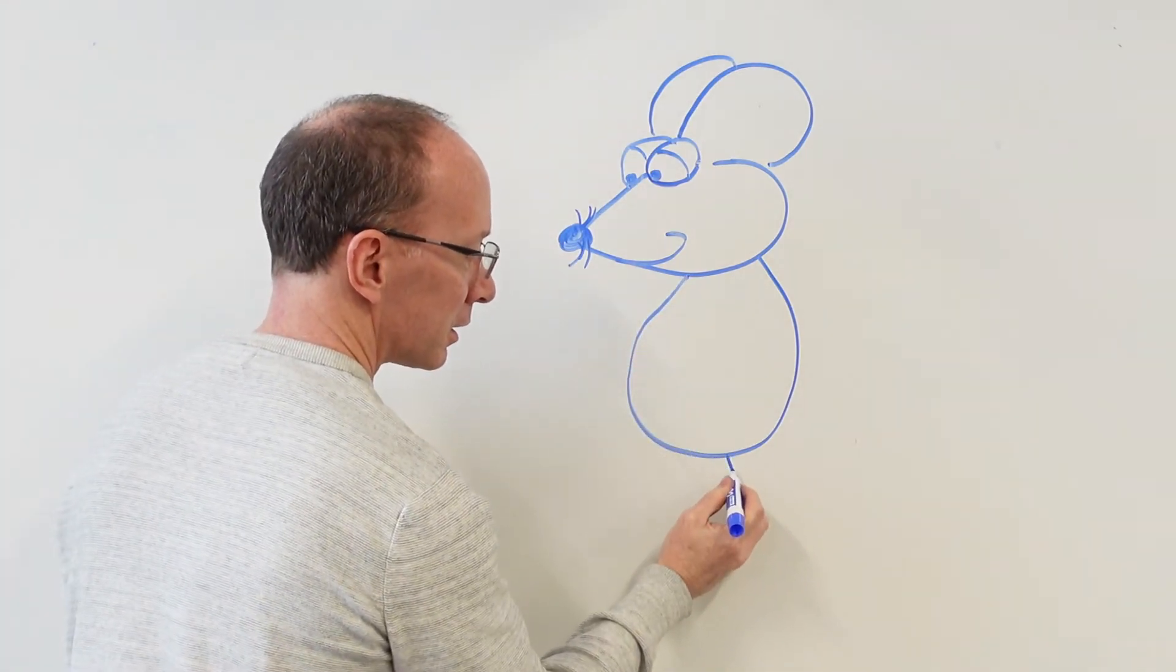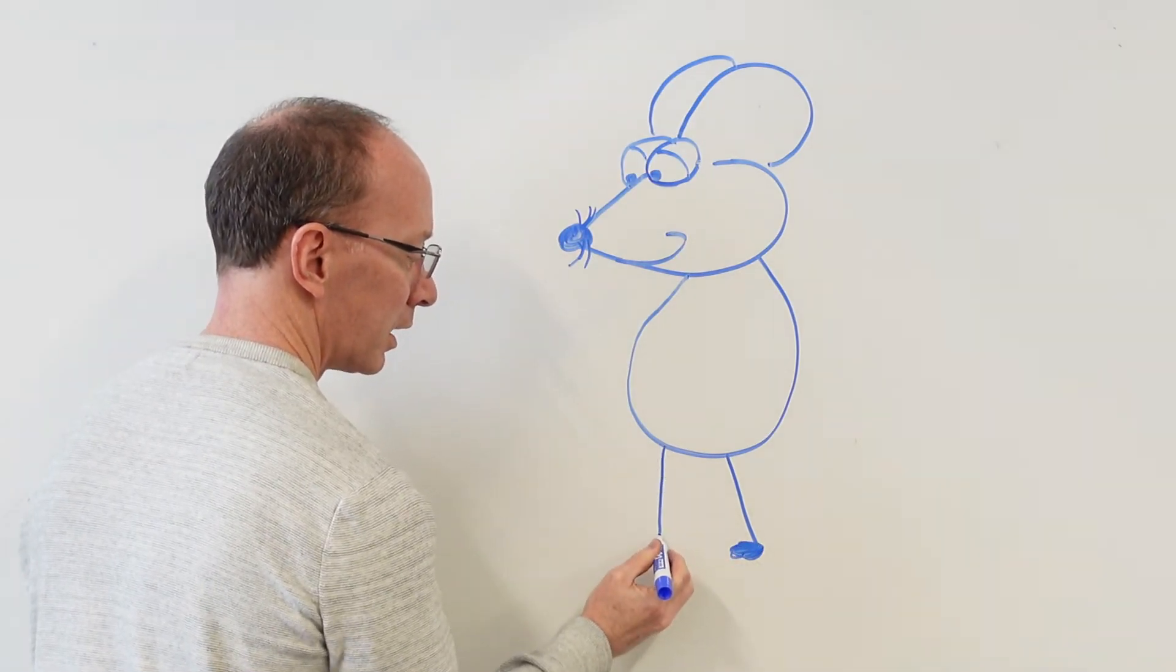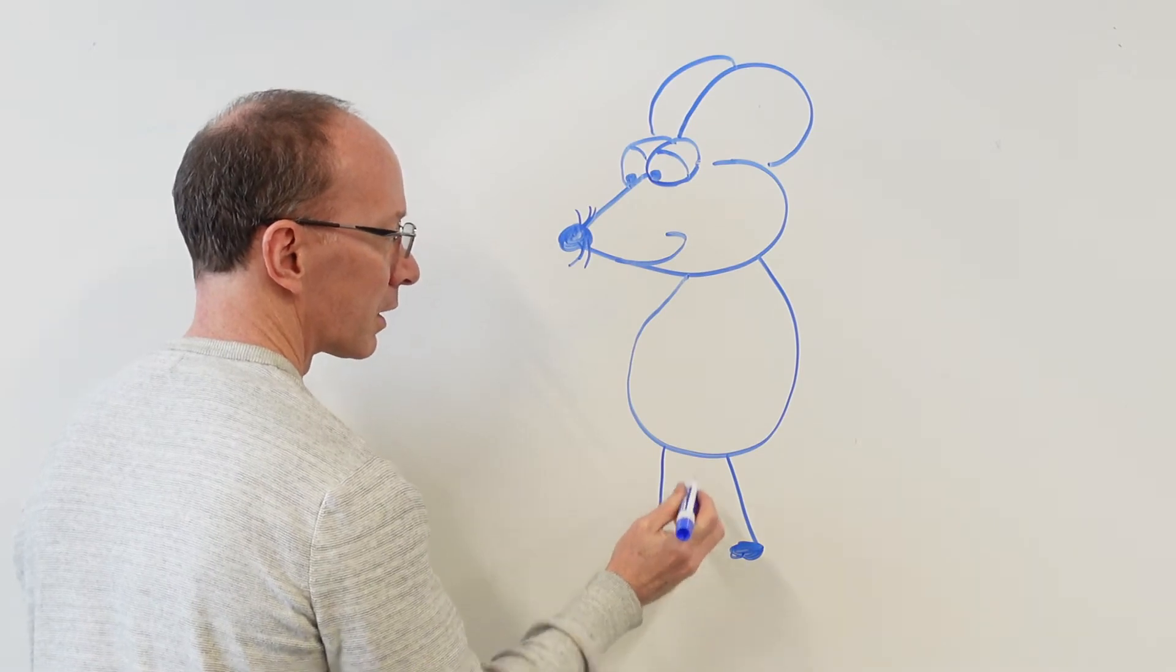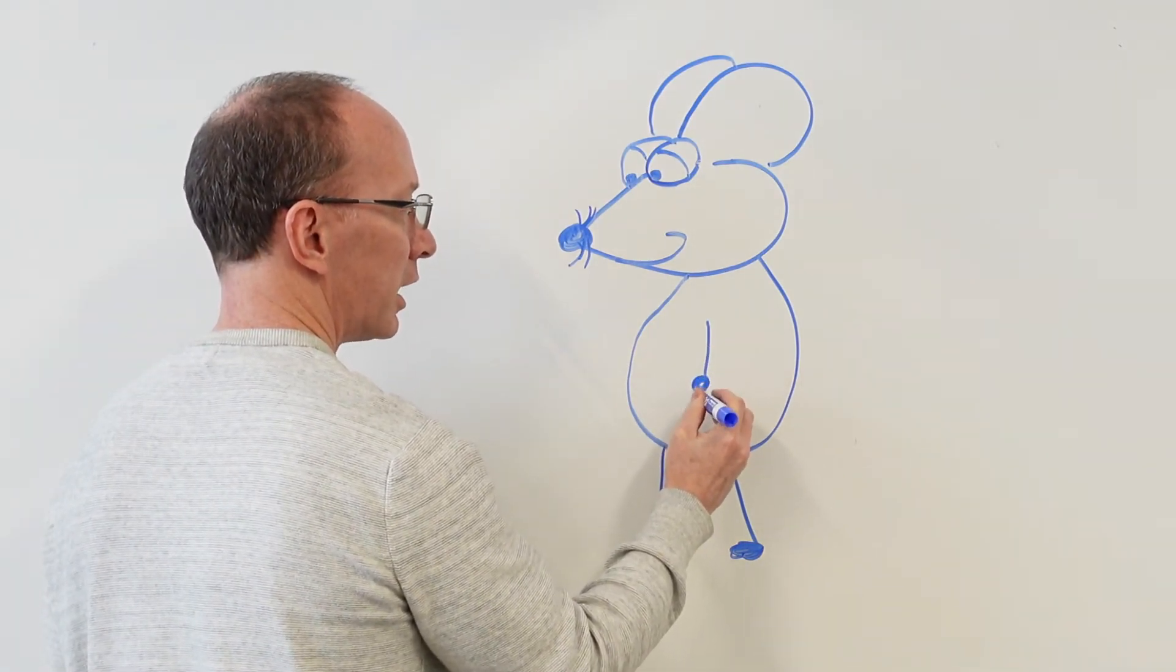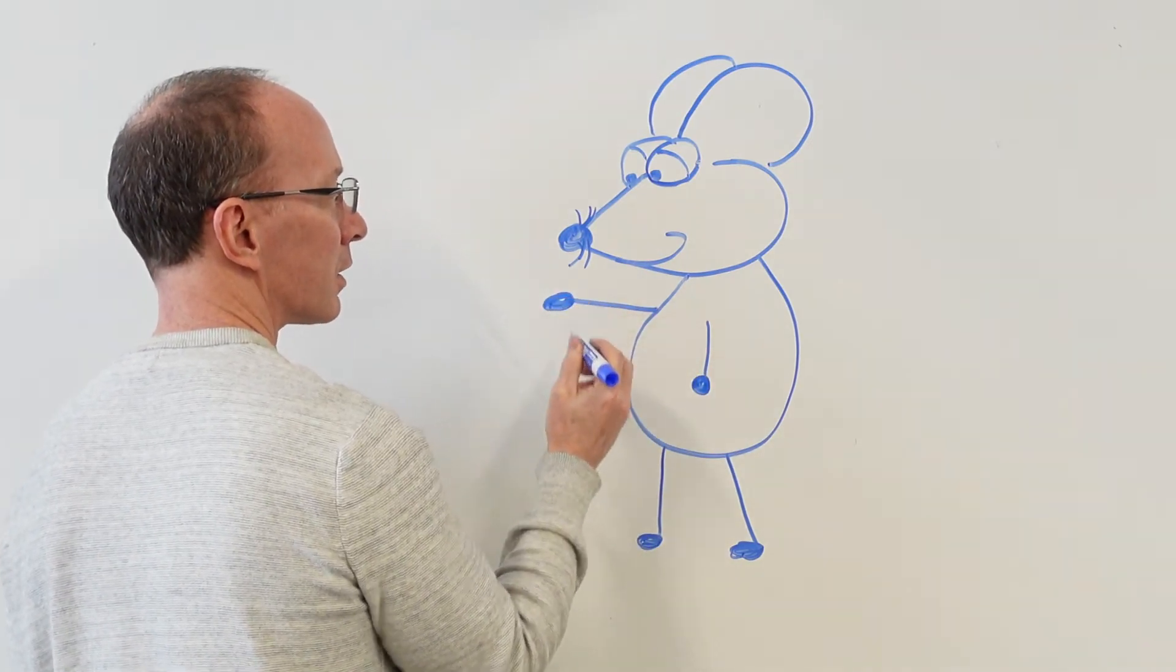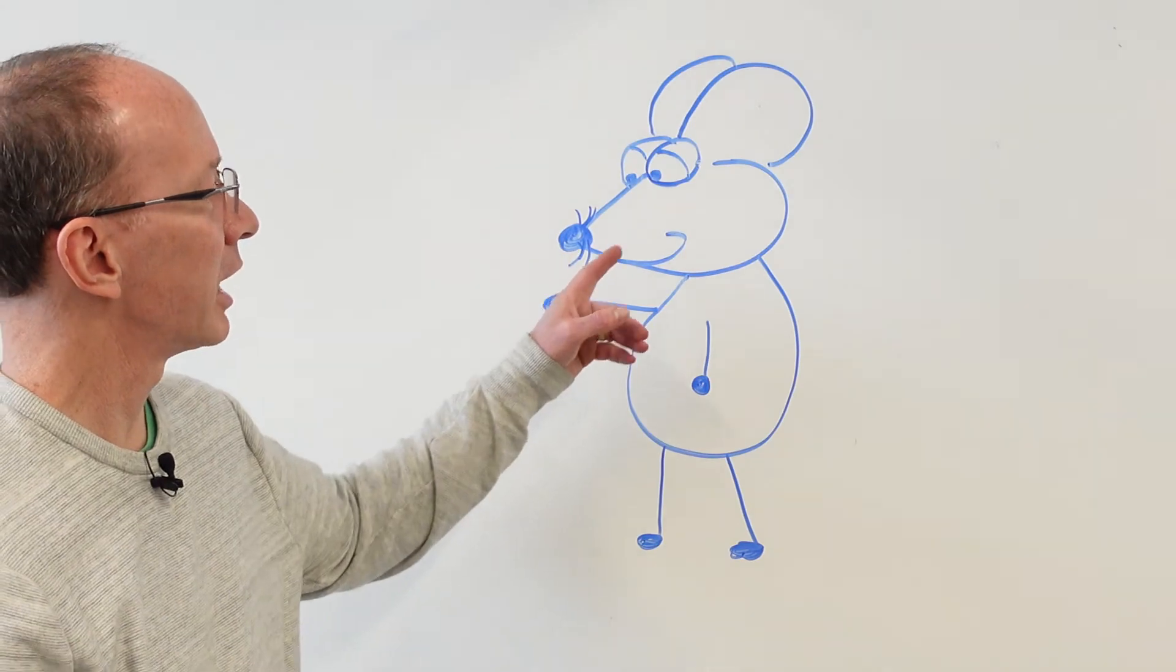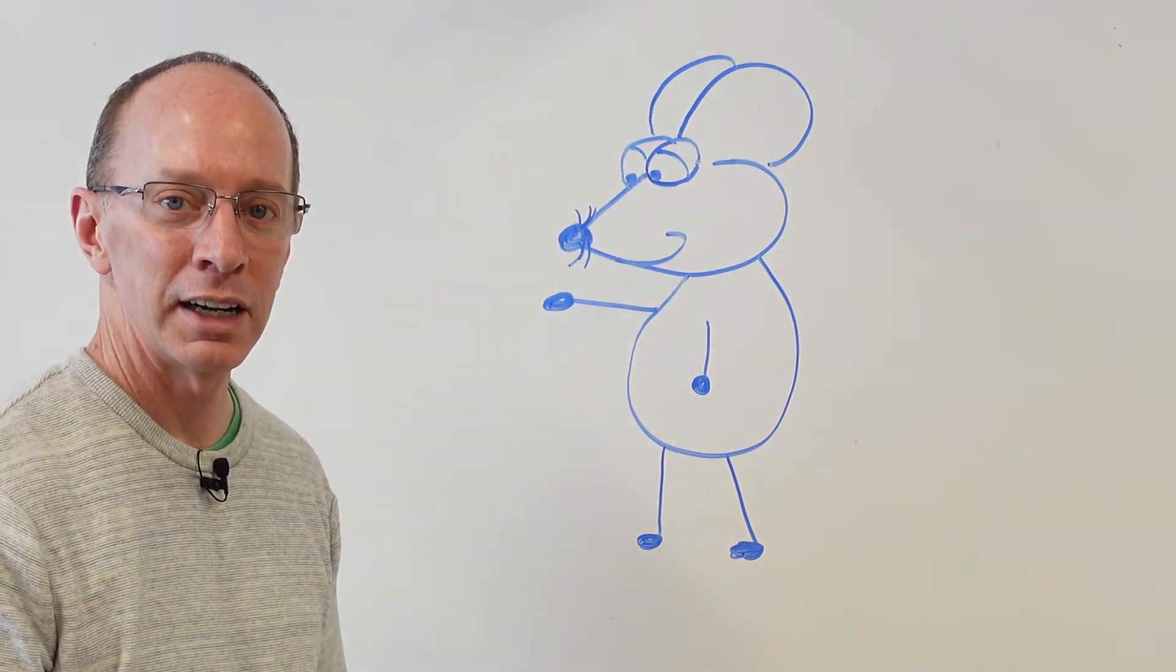Got the leg going here. Another leg with the foot. This one can be in this position down. And another one going this way. Give it a different expression with a smile and some different types of cartoon eyes.